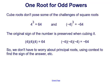Cube roots don't pose some of the challenges of square roots. With square roots, we have to be careful about positive and negative answers, but we don't have to worry about that with cube roots. For example, 4 cubed equals 64, and negative 4 cubed equals negative 64. Because 4 times 4 times 4 equals 64, when 4 is positive we get a positive product. And negative 4 times negative 4 times negative 4 equals negative 64 — a negative product.